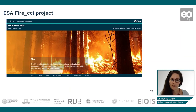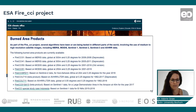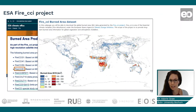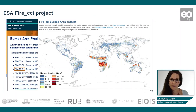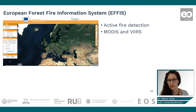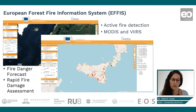There is also the ESA Fire CCI project, where you can get information on different burnt area products. For example, a map of the burnt area for the whole year 2019 clearly shows the African continent as most affected. There is also the European Forest Fire Information System, short EFFIS. It also provides active fire detection based on MODIS and VIIRS, and you can additionally conduct a fire danger forecast and get information on rapid fire damage assessment.